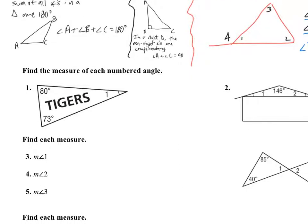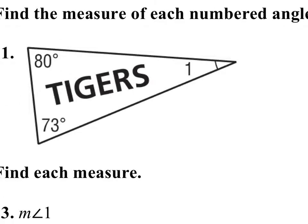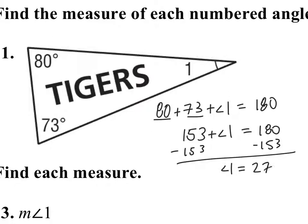Let's take a look at number 1. We want to find the measure of each numbered angle. I know that 80 degrees plus 73 degrees plus angle 1 equals 180 degrees. Combining 80 and 73 gives 153, so 153 plus angle 1 equals 180 degrees.